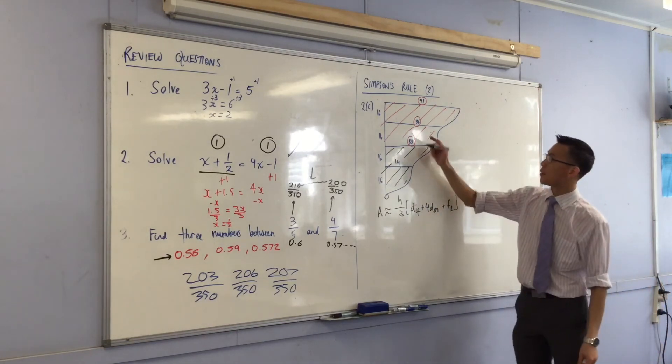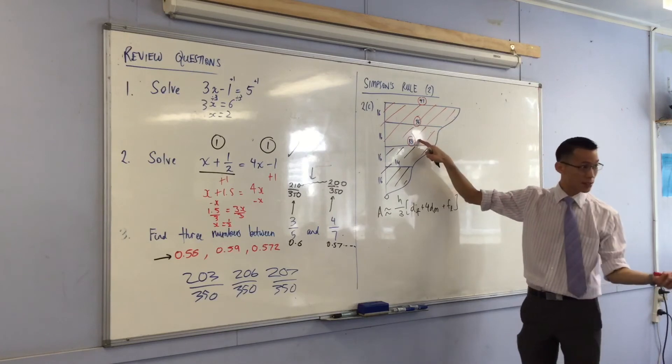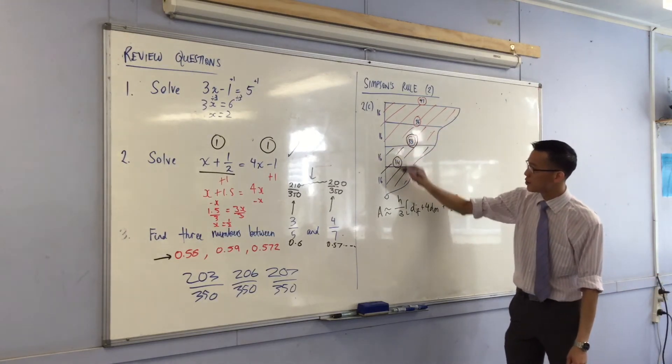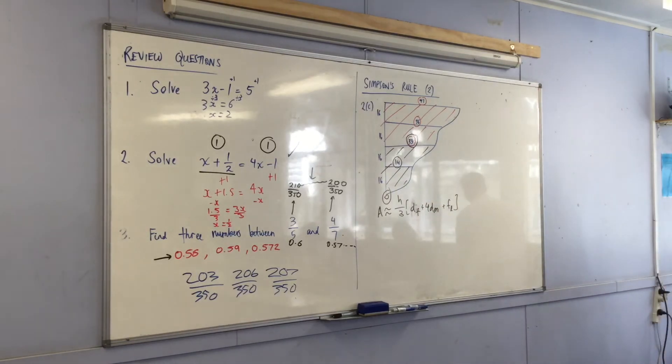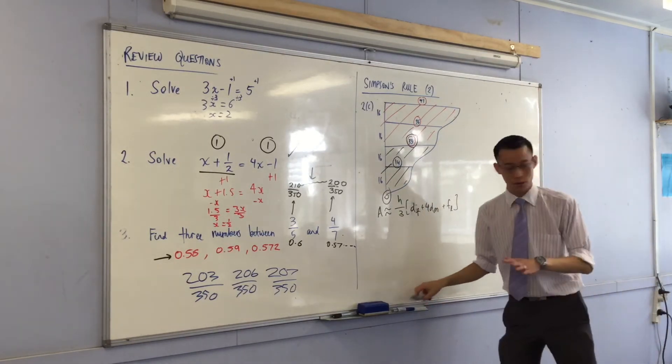So now you can see, one, two, three for the first application. One, two, three for the second application. Does that make sense? Why don't we actually do it, just so you can confirm you know what you're doing, right?